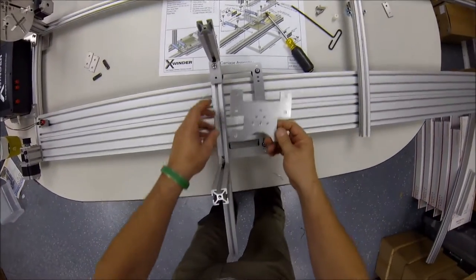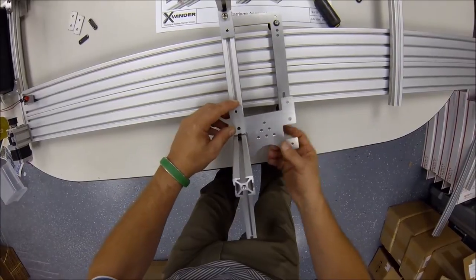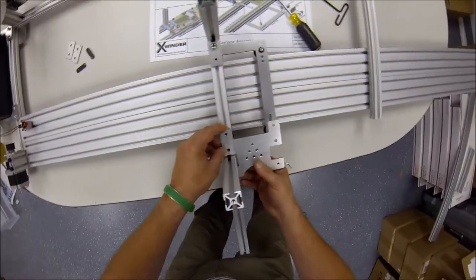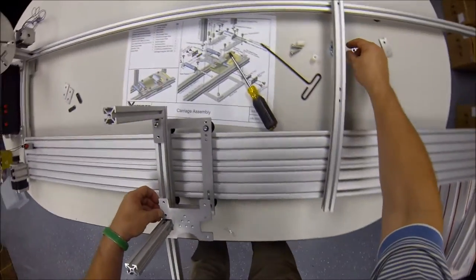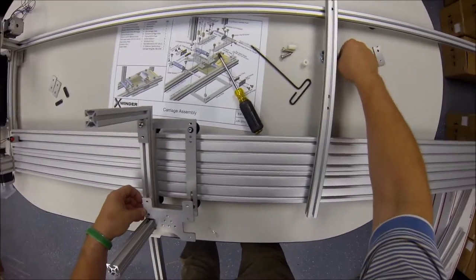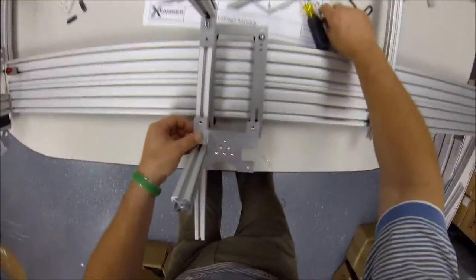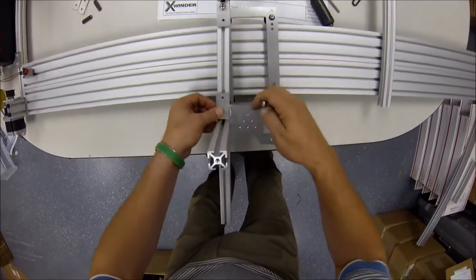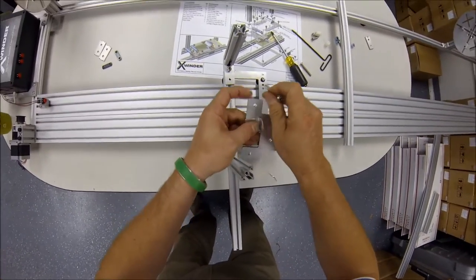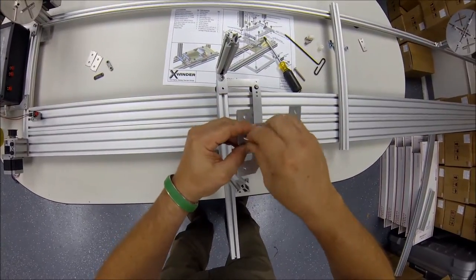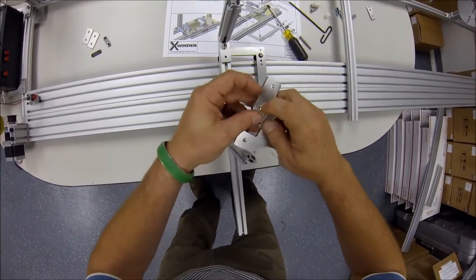So this is the aft carriage plate, which we'll install as shown, and we will want to get a PVC roller in there. So here's the roller support, this is the aft carriage plate.